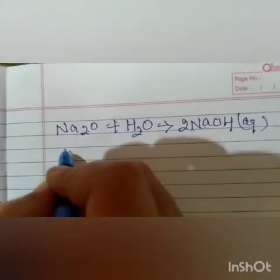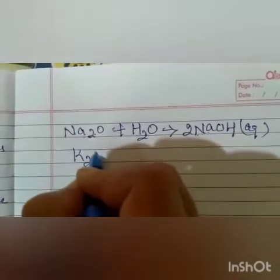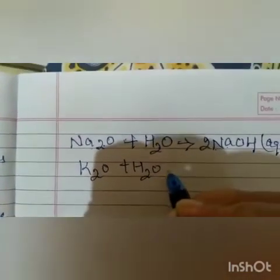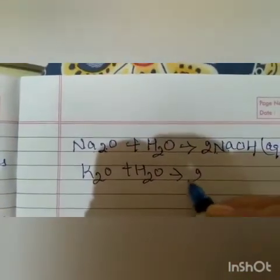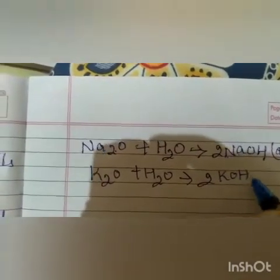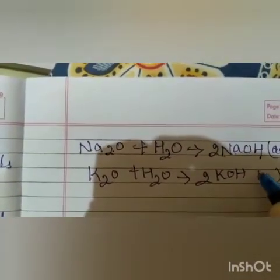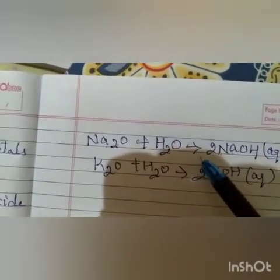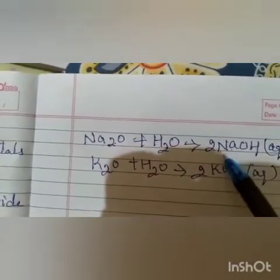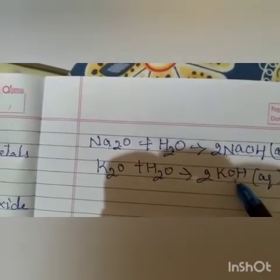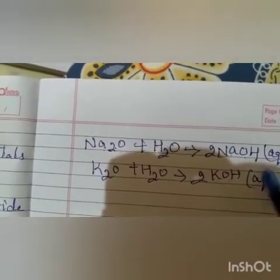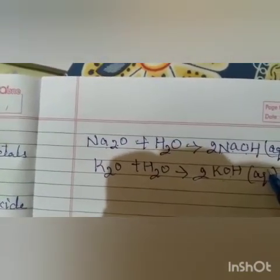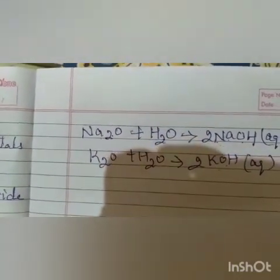Alkalis are the bases which dissolve in water. NaOH is a base, KOH is a base — and since they are written as aqueous, they are dissolved in water, so they are alkalis. I hope it is clear to everyone.